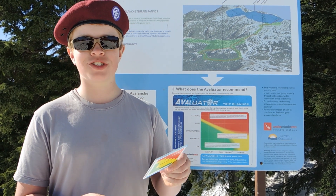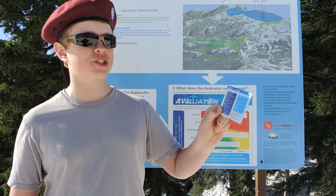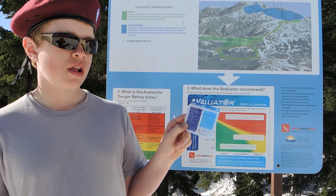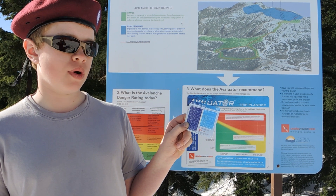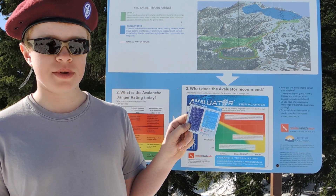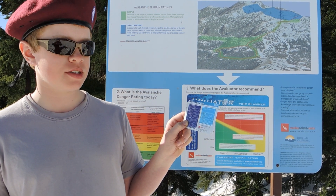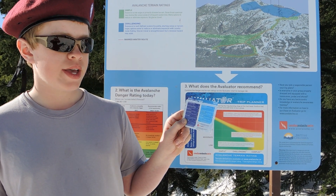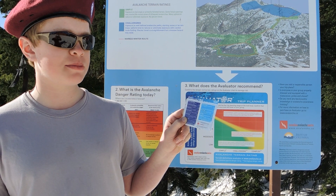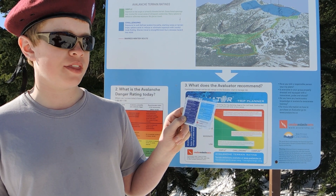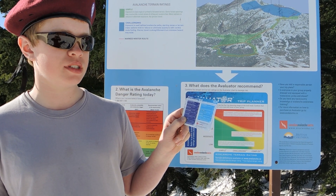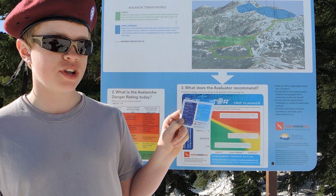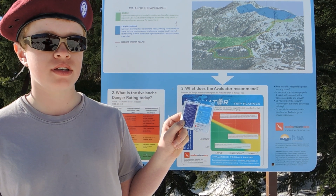Remember your score from the avalanche condition questions, and then answer the terrain characteristics questions. Question number one: slope steepness, which is in two parts. Part one, is the slope steepness between 30 and 35 degrees? Or, is the slope steeper than 35 degrees?